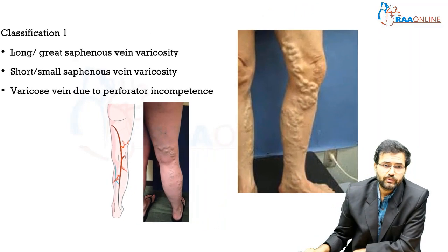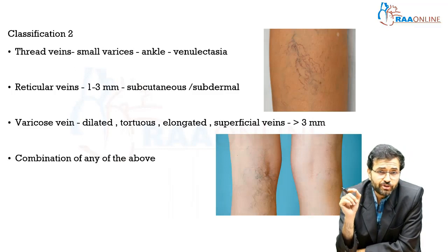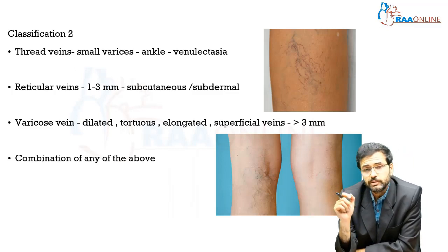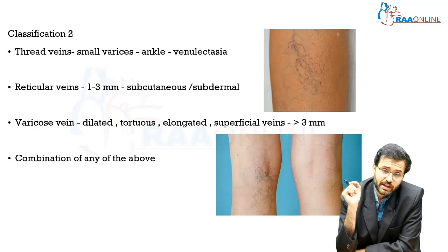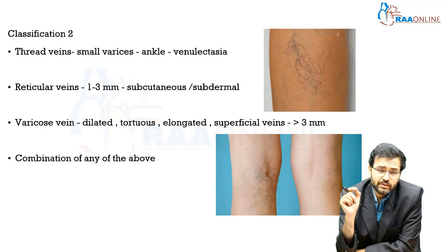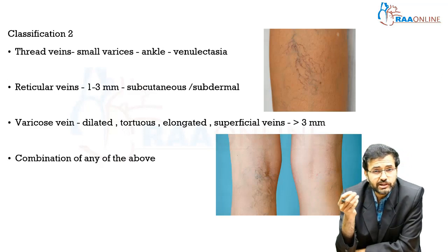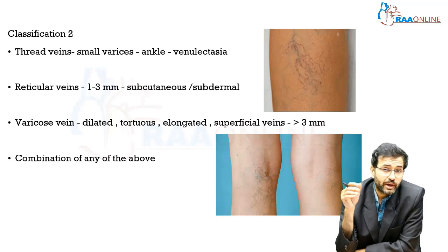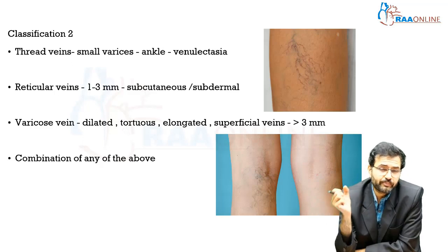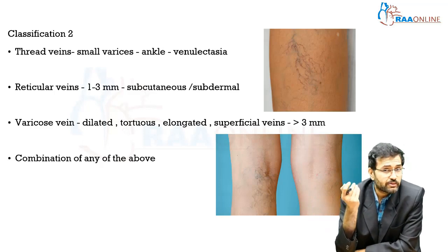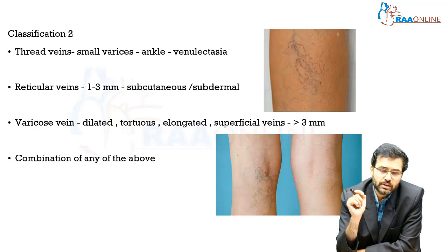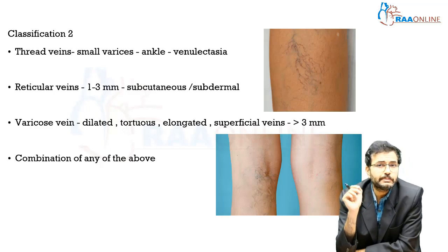The second classification system is based on the dimension of the veins involved. Thread veins are about 0.5 to 1 mm in size — extremely small varices seen around the ankle, representing small dilated pinkish-bluish vessels, also called venulectasia, analogous to telangiectasia. Reticular veins are slightly bigger at 1 to 3 mm and are usually seen within the subdermal plane.